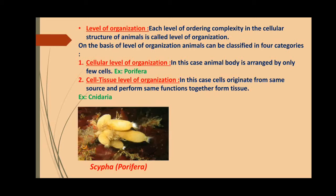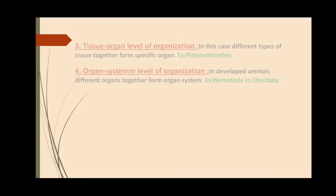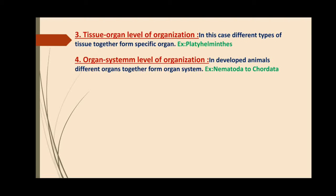Number two: cell-tissue level of organization — in this case cells originate from the same source and perform the same functions together to form tissue. For example, Cnidaria, such as Hydra. Number three: tissue-organ level of organization — in this case different types of tissue together form a specific organ. Example: Platyhelminthes.